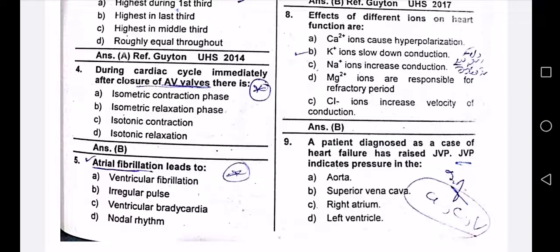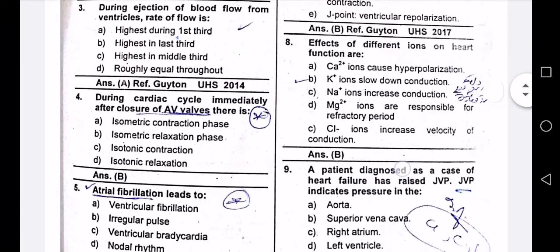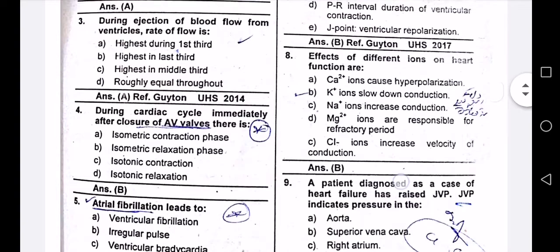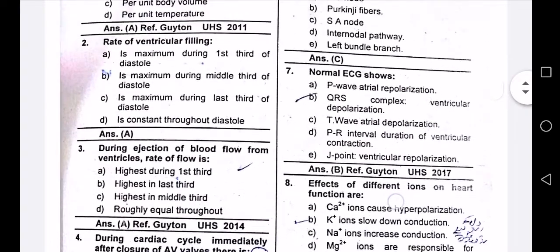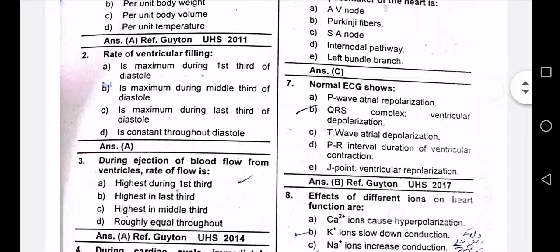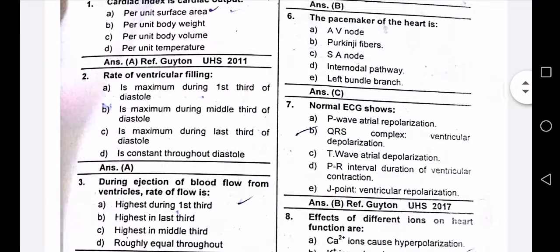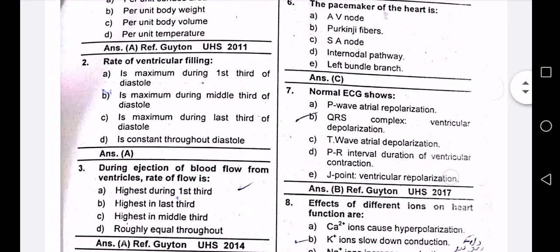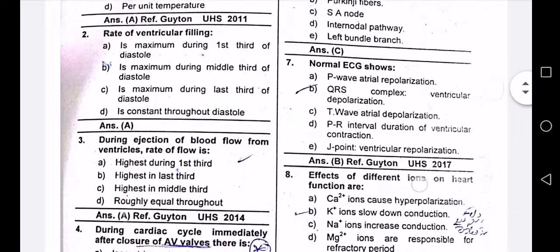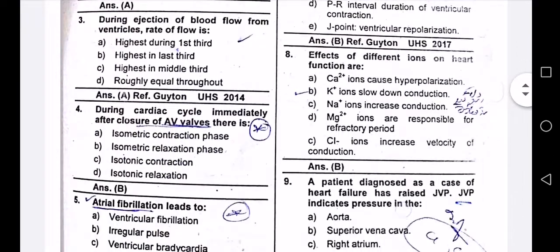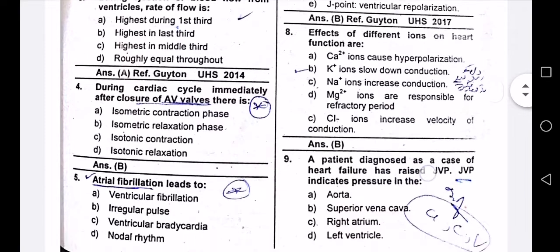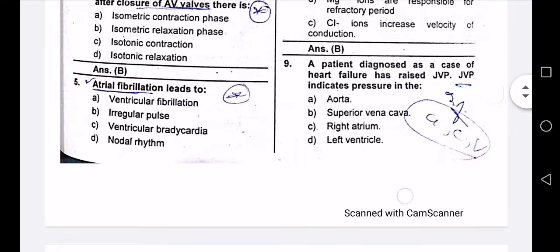Arterial fibrillations lead to changes. Normal ECG shows QRS complex — ventricular depolarization. The effect of different ions on heart function: potassium ions slow down cardiac activity.